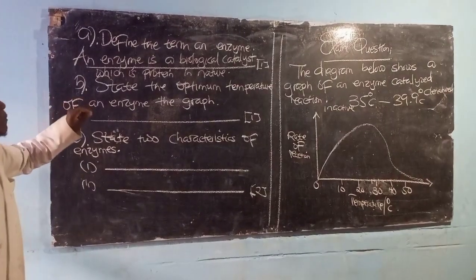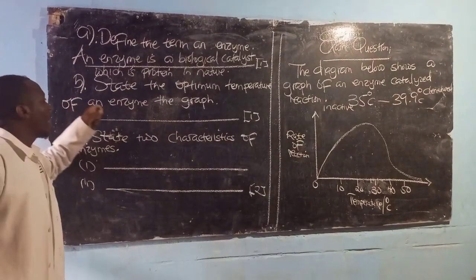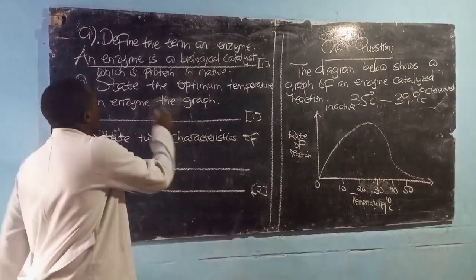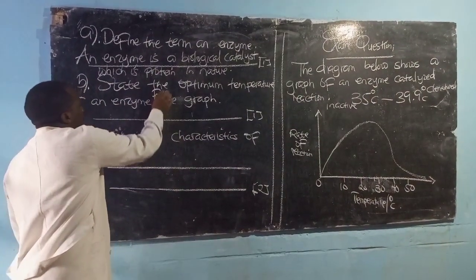Then on B, state the optimum temperature of an enzyme. That is from the graph, so talking about from the graph,